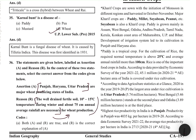Tip for assertion-reasoning questions: when confused, read both statements together. Ask if statement 1 is true, then check if the reason is correct because of statement 1. If the reason doesn't fit as an explanation, then both can be individually correct but reason does not explain the assertion.